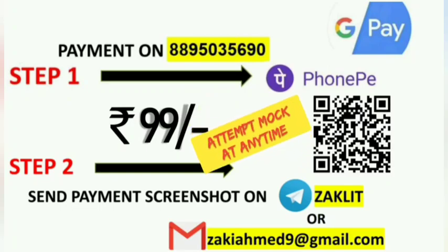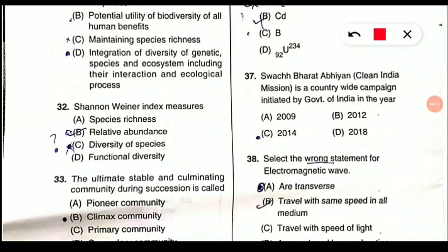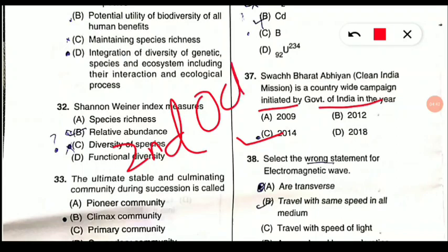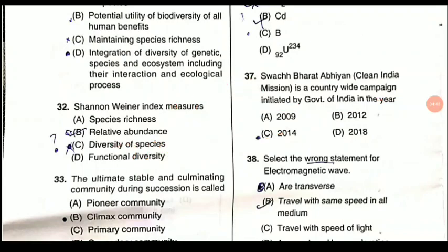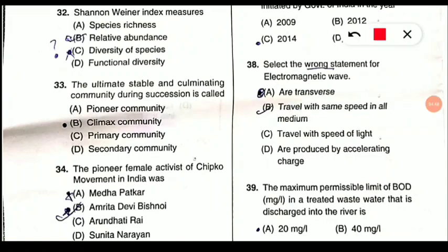Swachh Bharat Abhiyan, that is the Clean India Mission, is a countrywide campaign initiated by the Government of India. It was launched in 2014 — more specifically on 2nd October 2014, which is Gandhi Jayanti.